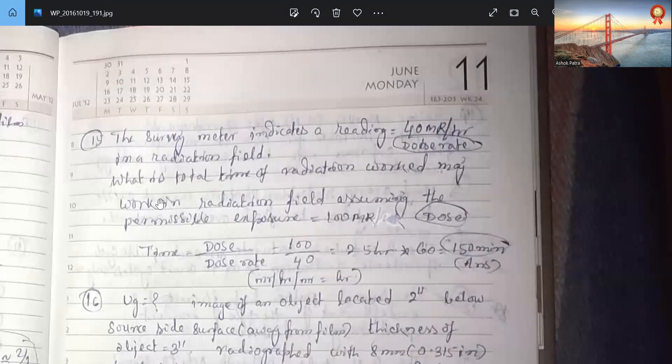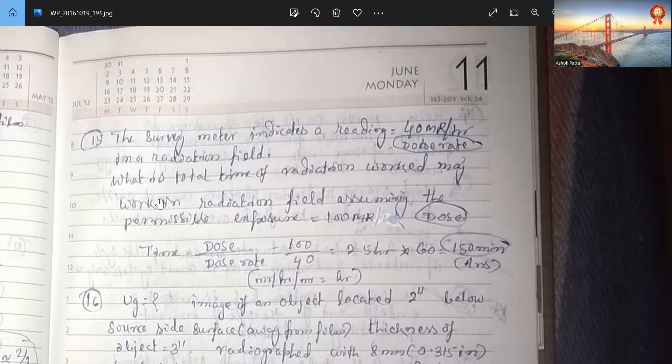The survey meter indicates a reading of 40 MR per hour dose rate in radiation field. What is the total time of radiation work? Working in radiation field, assuming the permissible exposure 100 MR dose. So dose by dose rate, 2.5 hours into 60. So 150 minutes it can work.